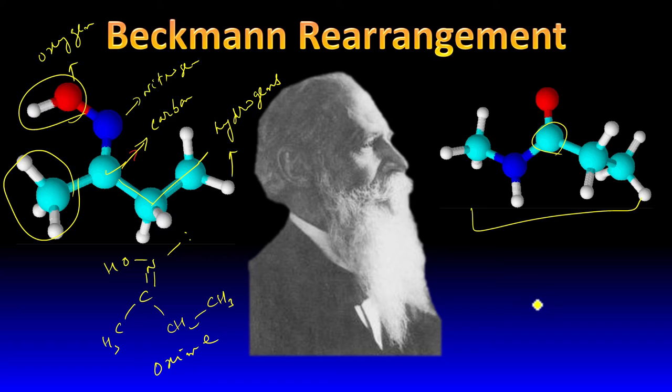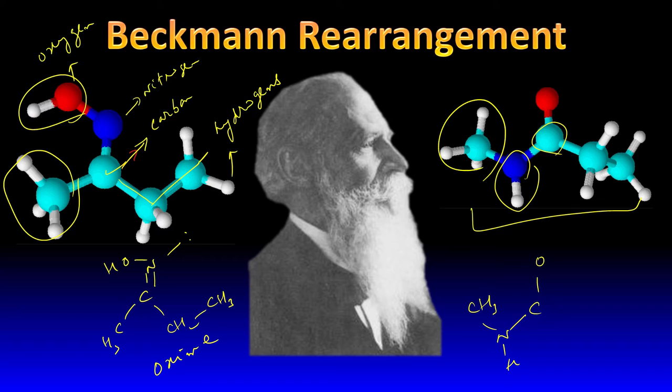Now on the product side, there is carbon bonded to O, bonded to NH, and N is bonded to CH3. And then this is bonded to C2H5, so obviously there has to be a double bond here and this becomes an amide.